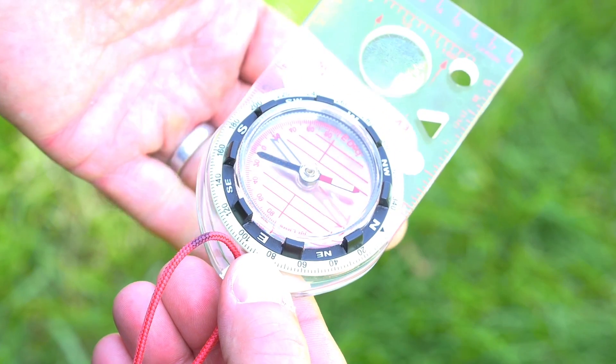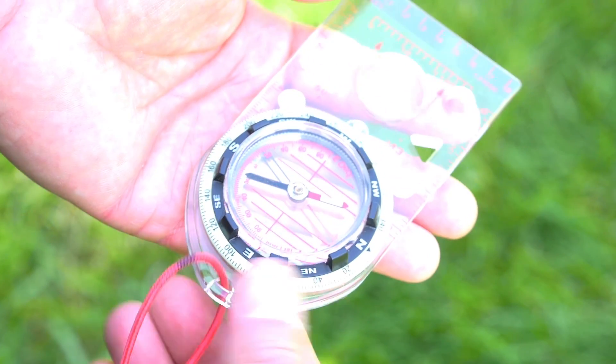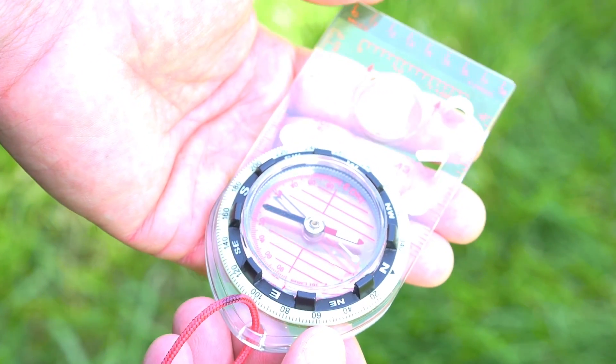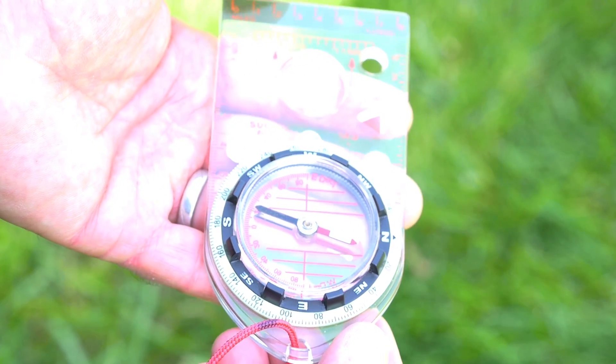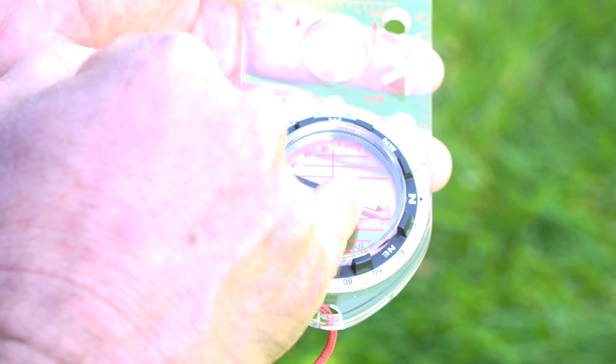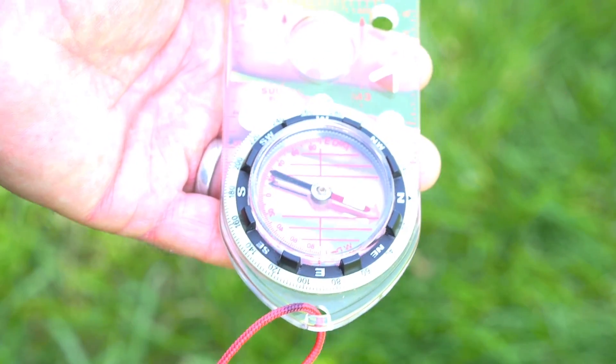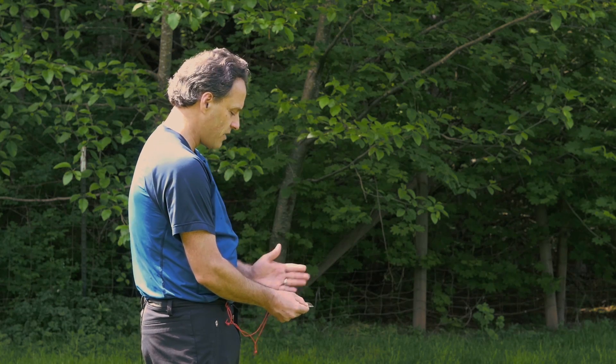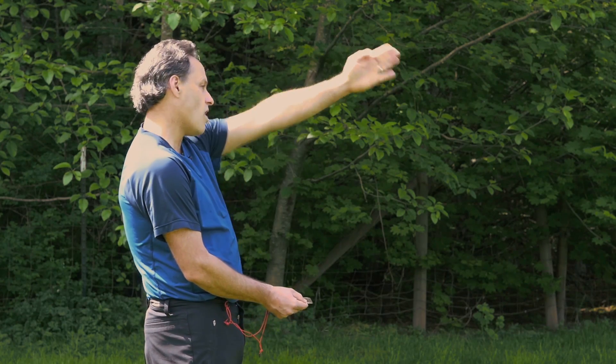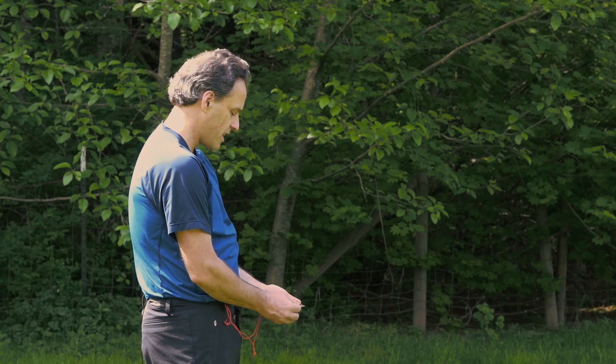Then, holding the compass flat in front of me at waist level, I'm going to rotate my entire body and the compass base plate until red is in the shed, lining up the red magnetic needle with the red orienteering arrow. Now, myself and the compass are both facing due west, and I can walk out on that bearing in the direction I need to go.